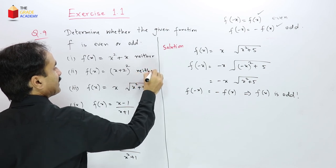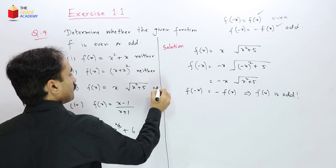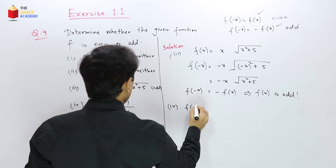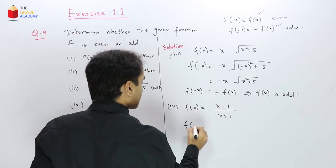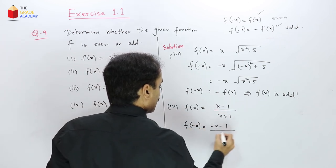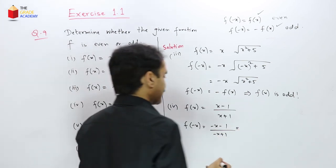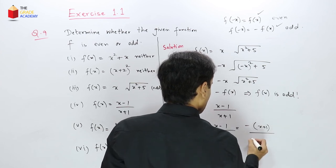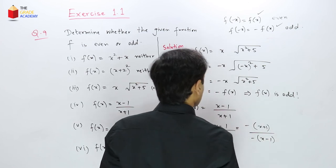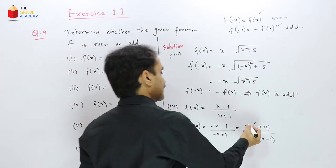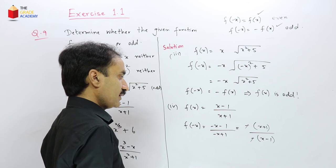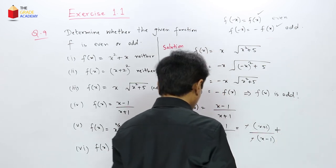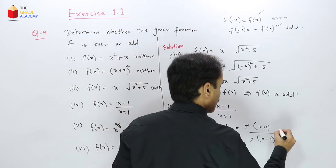For f(x) = (x−1)/(x+1): substituting −x gives (−x−1)/(−x+1). Taking −1 common from numerator: −(x+1), and from denominator: −(x−1) are available, but after simplification the result is neither f(x) nor −f(x). So this function is neither even nor odd.